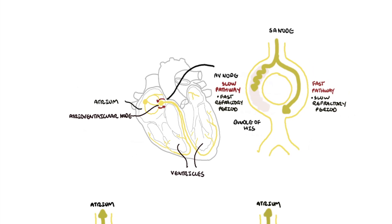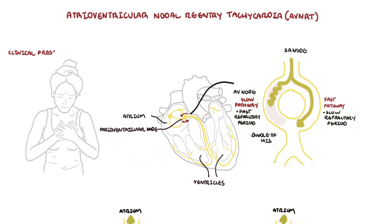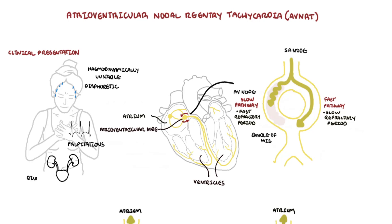AVNRT usually affects young people. A young female, for example, will present with palpitations — which are almost always reported. They can be diaphoretic; patients are uncommonly hemodynamically unstable. People often have a feeling of diuresis, which is due to elevated atrial pressure and release of ANP.